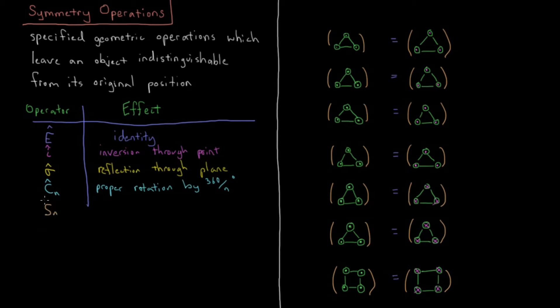Finally, the last one, SN is improper rotation by 360 over N degrees. So improper rotation means we not only do the operation of rotation by 360 over N degrees, but then we're also going to reflect it through a mirror plane which is perpendicular to this axis. This one also will make more sense when we see that in practice.